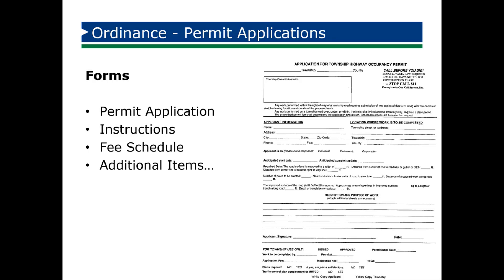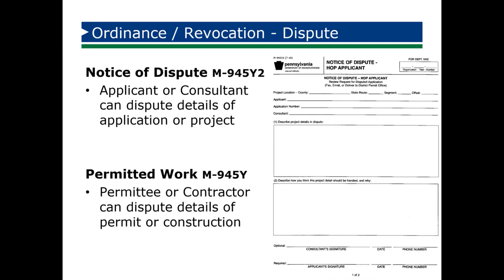At the bottom you can see the area for the municipality to complete — it talks about the fee. Notice it says application fee, then inspection fee, then total. So when we're talking about fees, there's a cost for you to administer this program and also a cost to inspect the road while work is being completed and after it's done. Also below there it asks if a plan is required and if the plan submitted was satisfactory, as well as a traffic control plan. A fee schedule should accompany this so that the applicant understands what their fees might be. You may also have a form for them to complete their traffic plan on.